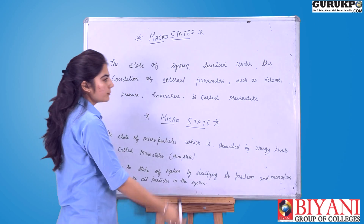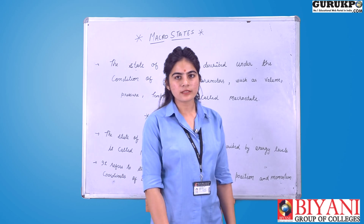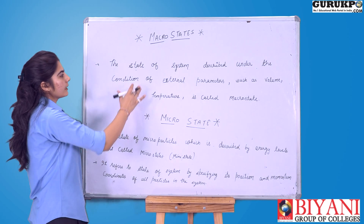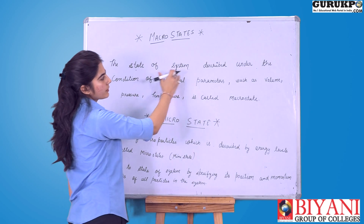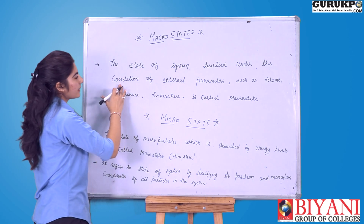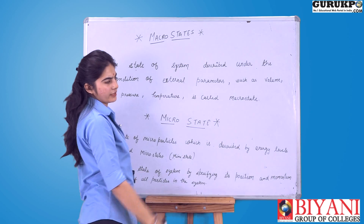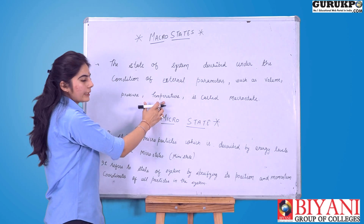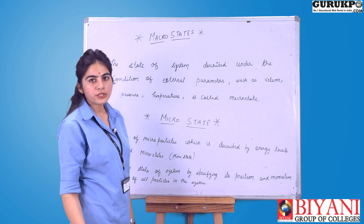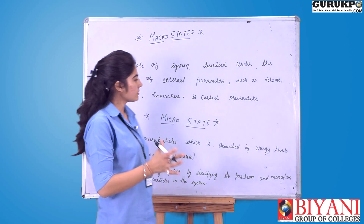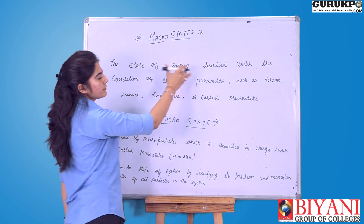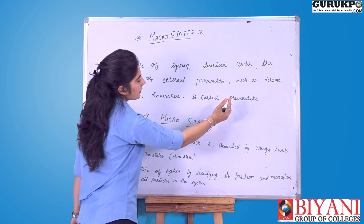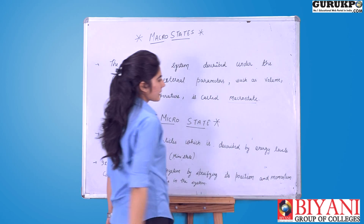We often hear about macrostates and microstates in thermodynamics and solid-state physics. A macrostate is simply a state of the system described under the condition of external parameters. External parameters are volume, pressure, and temperature, which give information about the whole system.